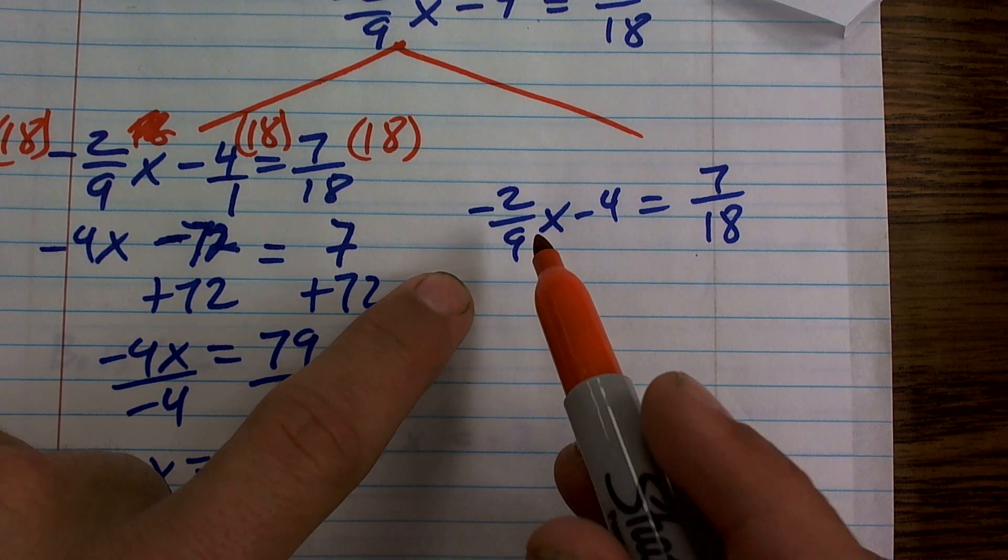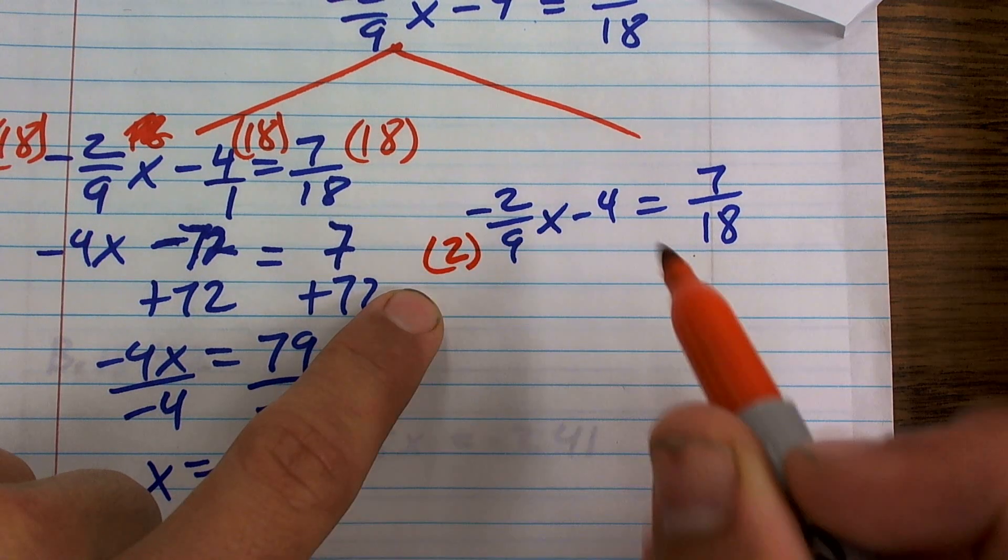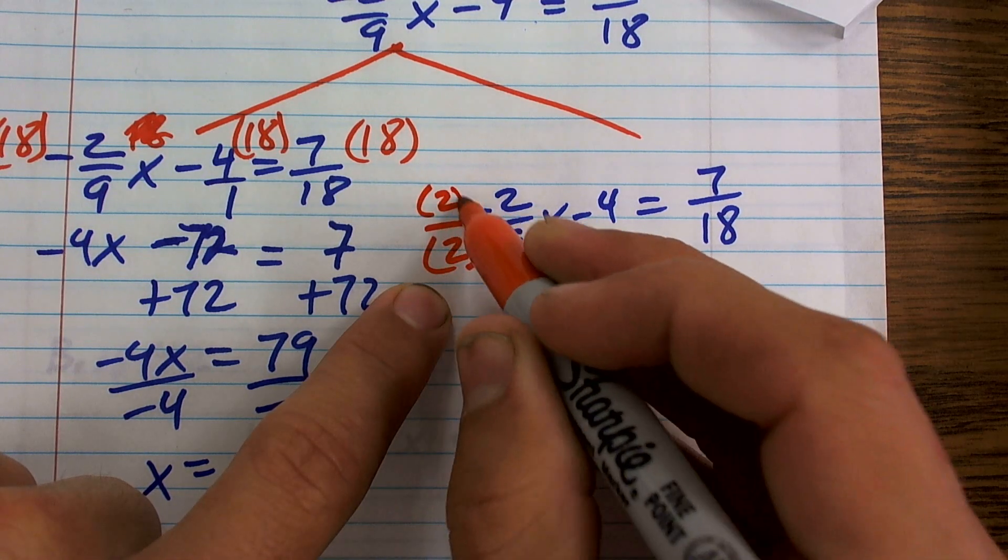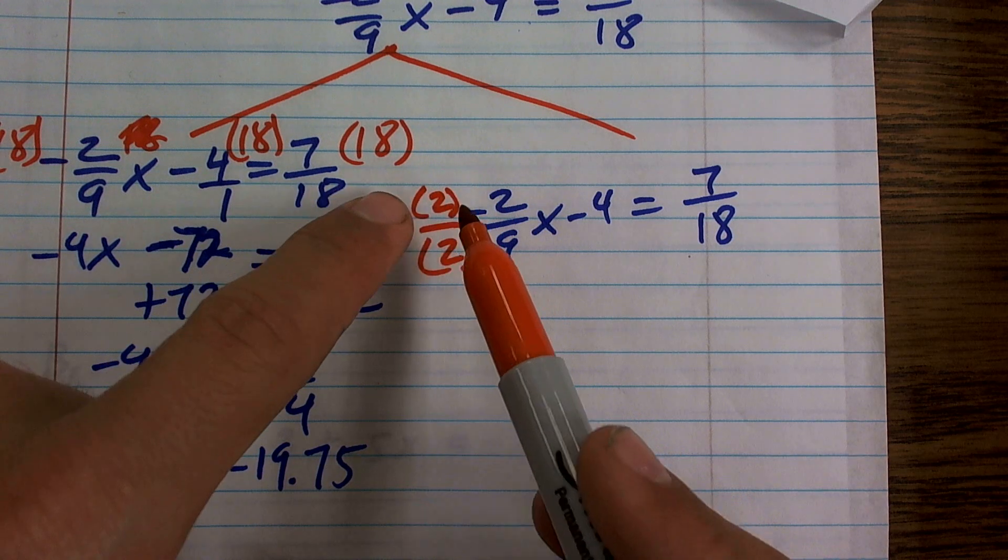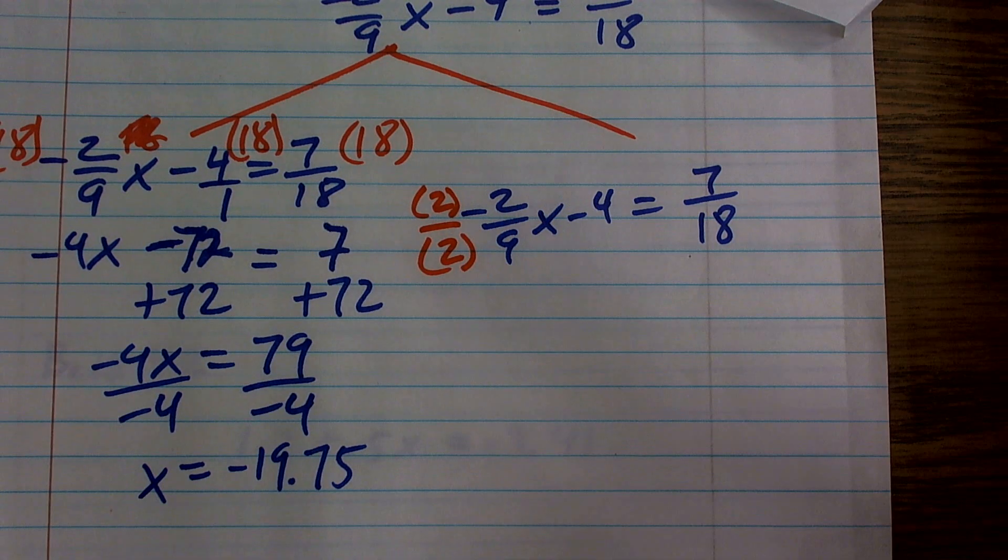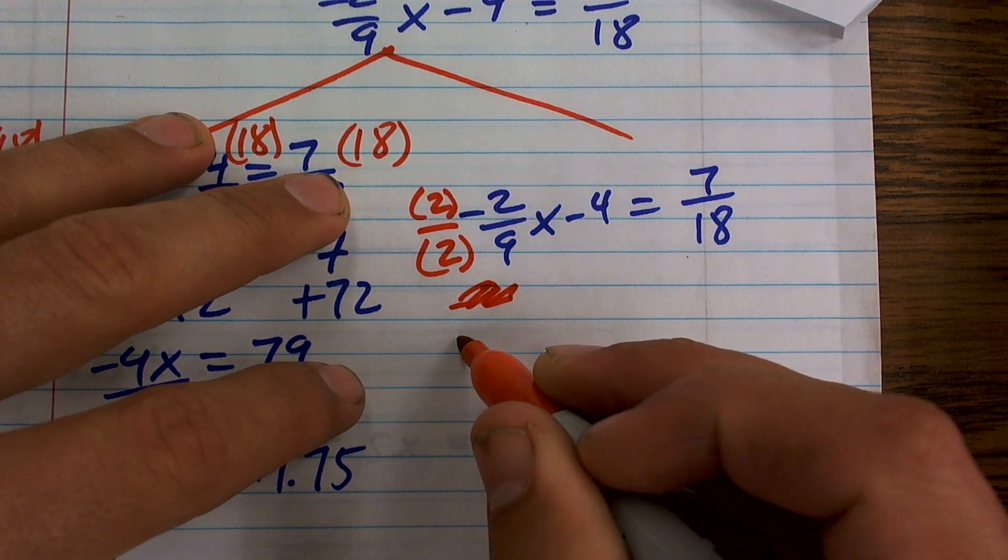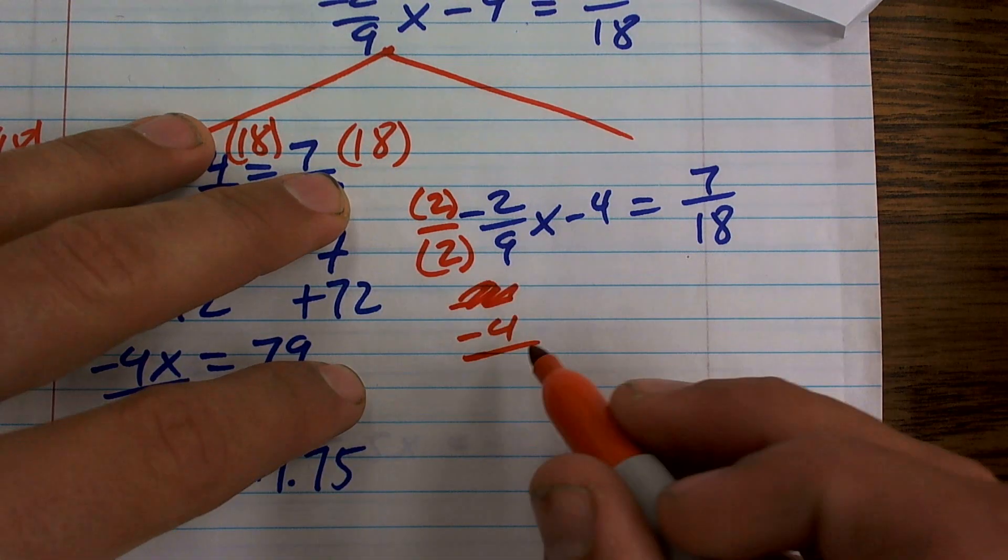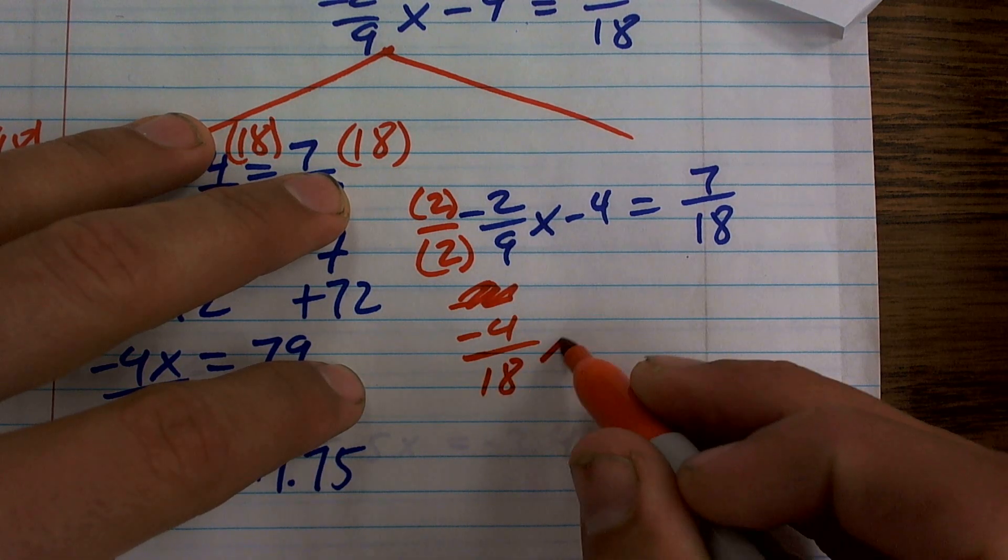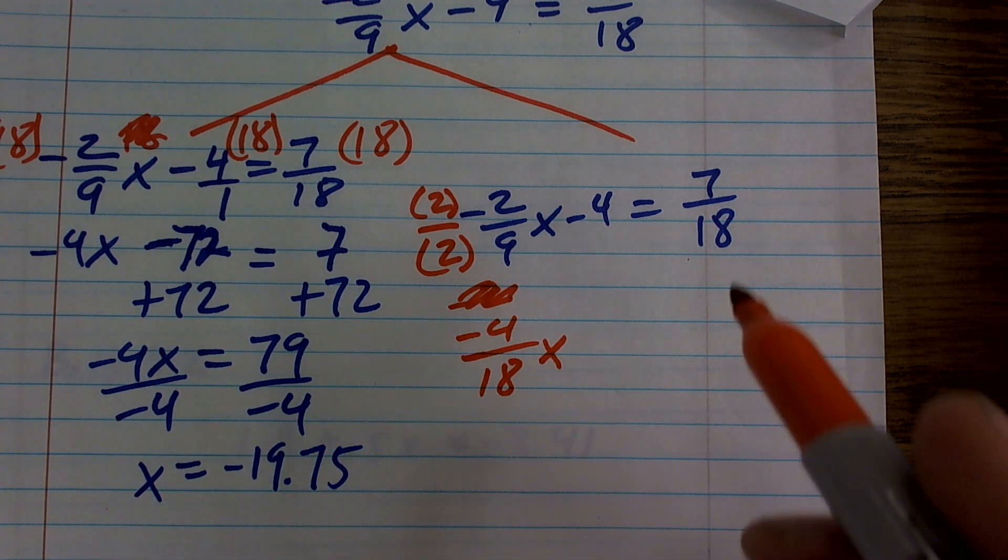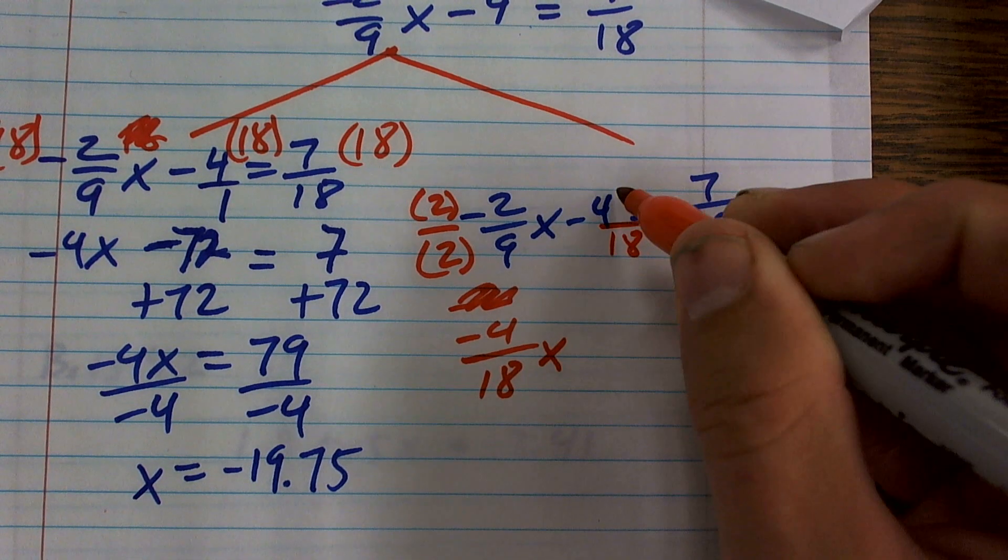To get negative 2 over 9 to be 18 in the denominator, I need to multiply the denominator by 2. However, to avoid having to multiply everything by 2, I need to multiply the numerator by 2 as well. Because whenever you multiply a fraction by the same numerator and denominator, it doesn't change the problem. What's 1 half times 2 over 2? It's 2 fourths, which is still 1 half. So since I'm not changing the value of the equation, I don't need to multiply everything by 2 over 2. Then I need to go for how do I get negative 4 to be over 18? Well, I have to multiply by 18 over 18.